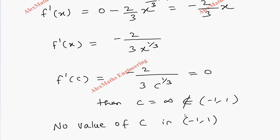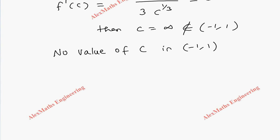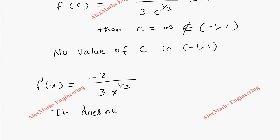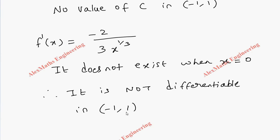As per Rolle's theorem, we have to get a value of c in the interval. But here we notice that f dash of x is minus 2 by 3 x power 1 by 3, and this does not exist when x is 0. Since f dash of x is minus 2 by 3 into x power 1 by 3, it does not exist when x equal to 0. When x is 0, this becomes infinity and the derivative does not exist. Therefore, it is not differentiable in minus 1 comma 1 because 0 is a part of this interval.